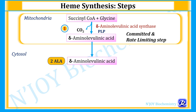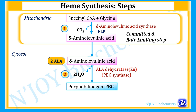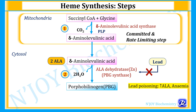Step 2 occurs in the cytosol, so delta-ALA is transported there. Two molecules of delta-ALA combine to form porphobilinogen (PBG), with loss of two water molecules. This reaction is catalyzed by ALA dehydratase, also called porphobilinogen synthase, which is a zinc-containing enzyme. Lead can inhibit ALA dehydratase; therefore, in lead poisoning, ALA accumulates and anemia can occur.